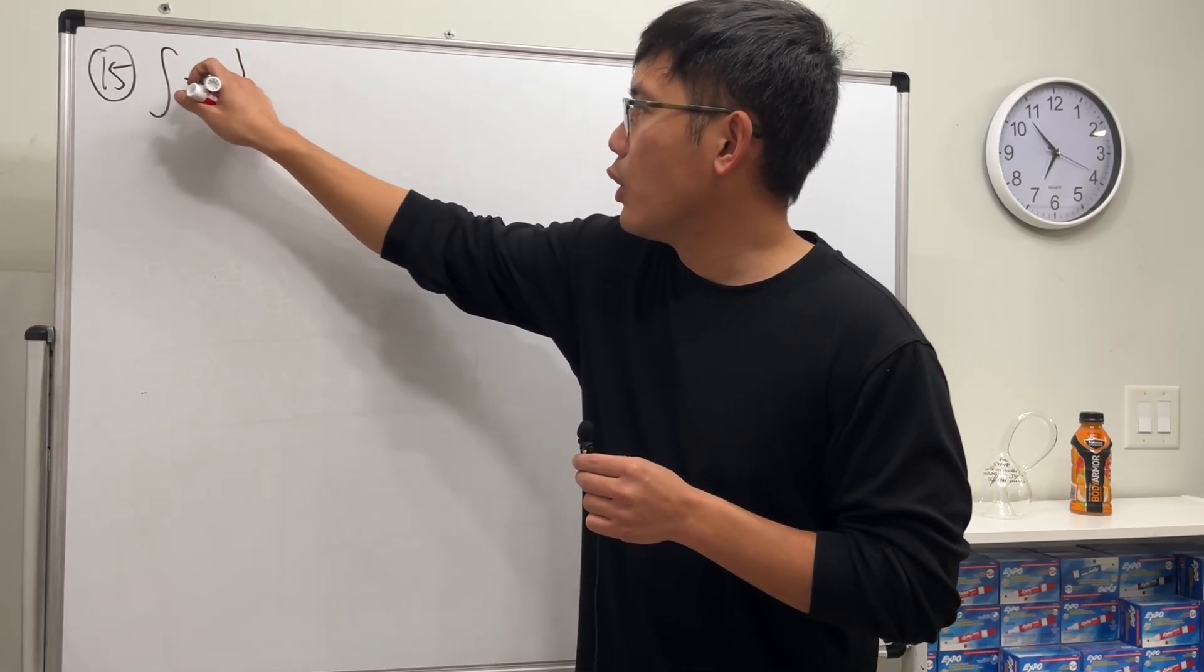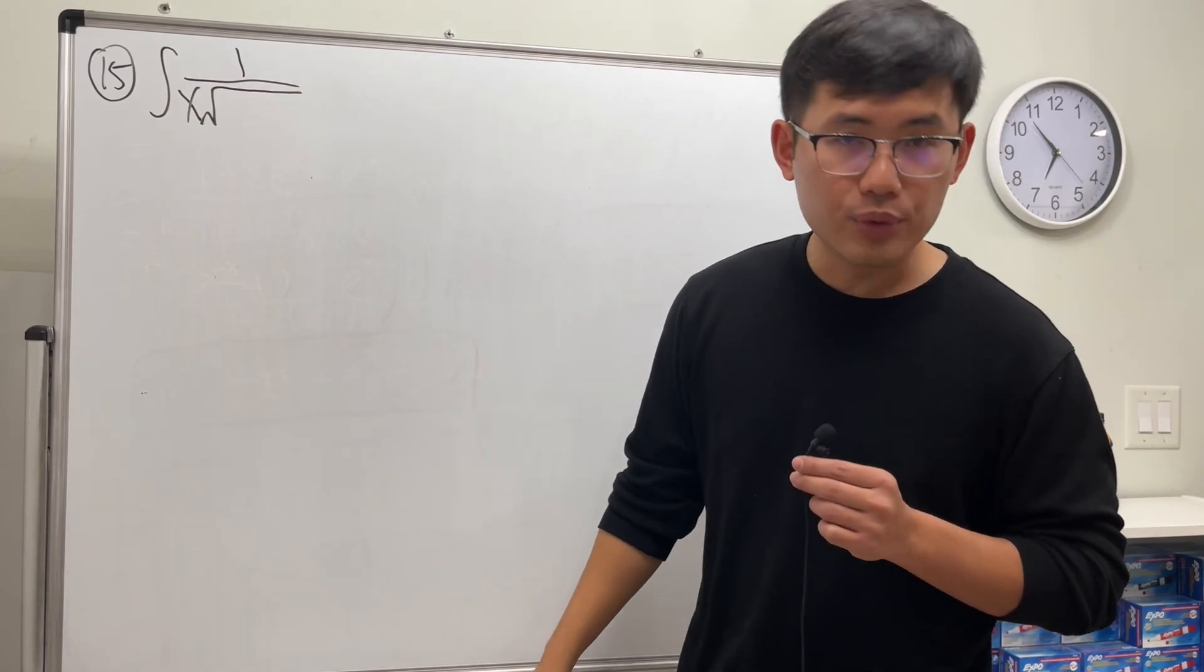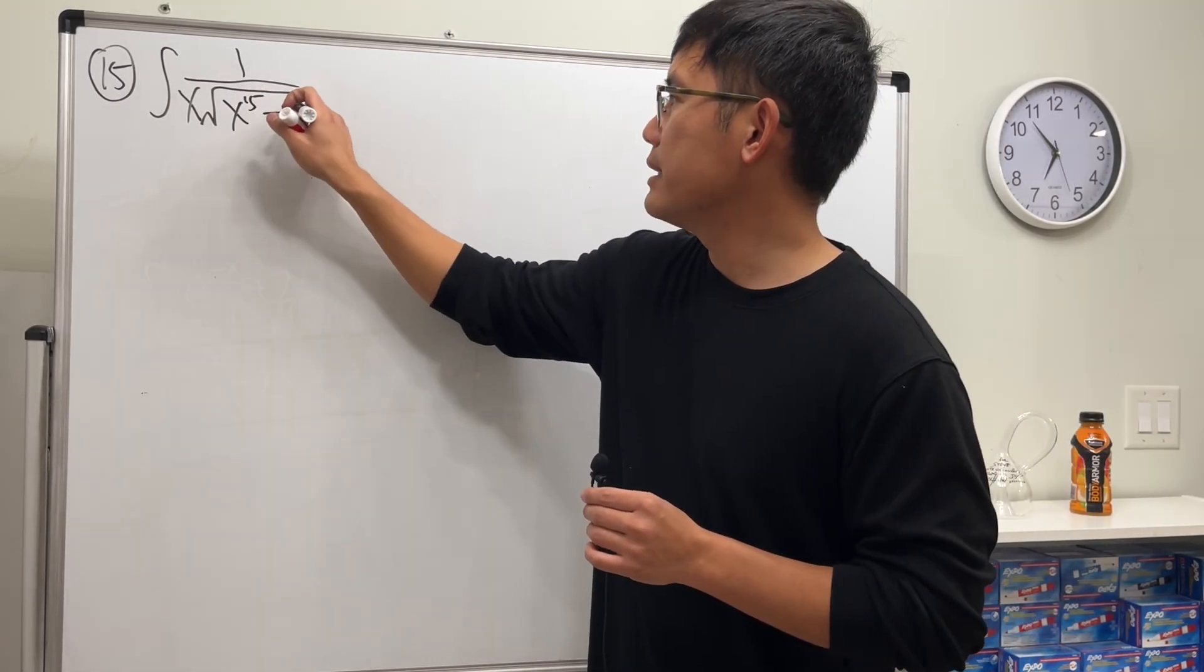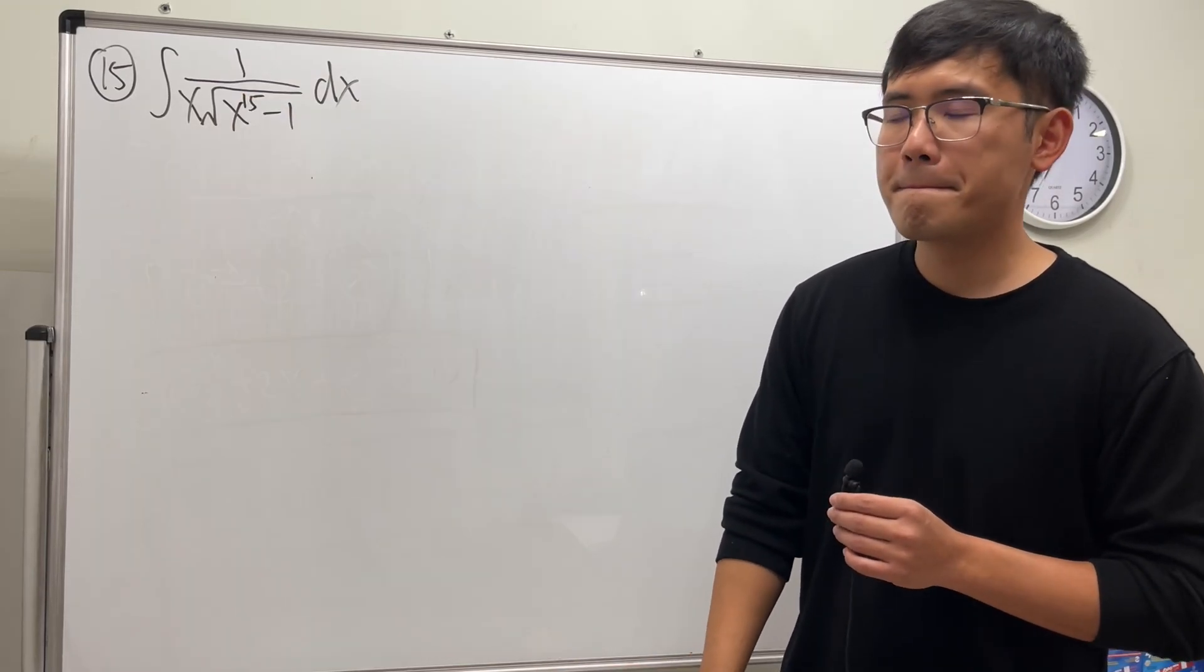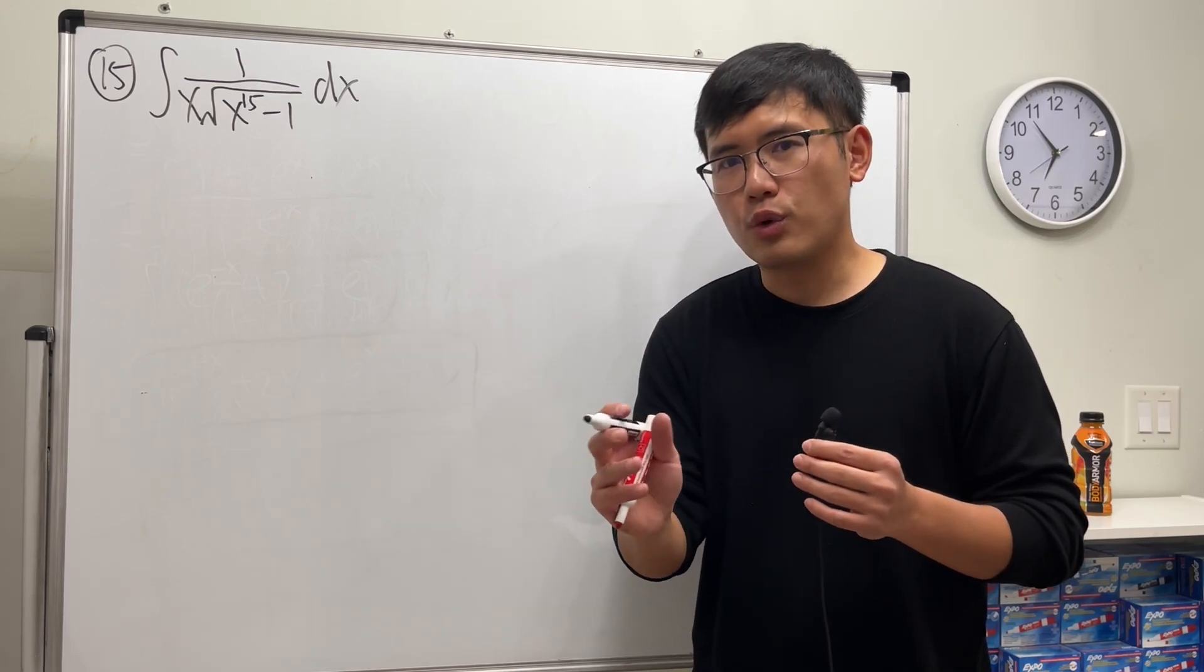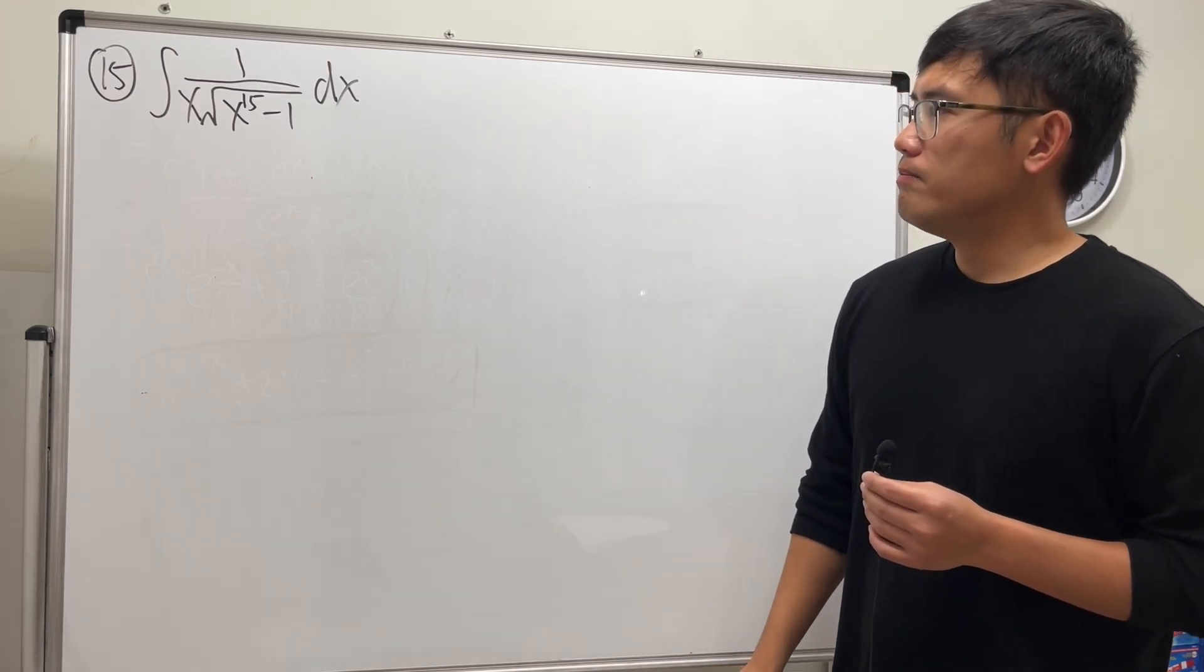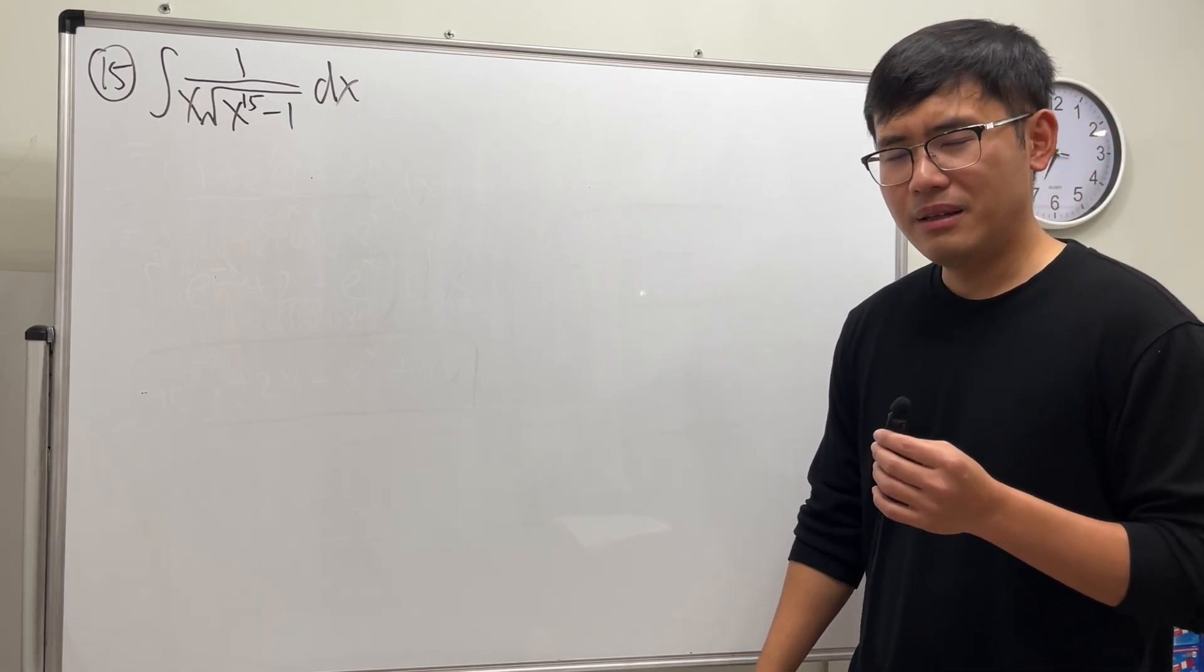We are looking at the integral 1 over x times the square root, and we have x to the 15th power minus 1 dx. Okay, so what do we do? Here's the thing: usually when we have an integral with a square root part, if you're kind of stuck, then just do a u-sub and let u be the square root part and hope for the best.